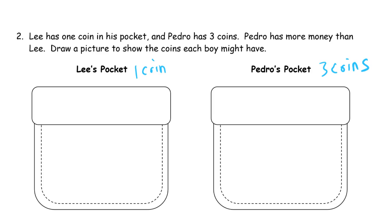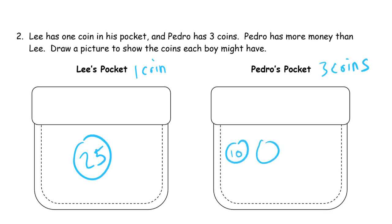Lee could have 1 coin — Lee could have a quarter. There are a lot of answers for this, but here's just an example. Say Lee has a quarter. Pedro's got 3 coins, so it's going to have to add up. It could be 3 quarters — that would be a lot more. But let's just say he has 3 dimes. That would be 10, 20, 30.